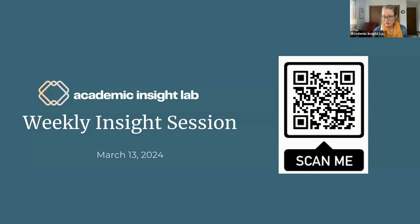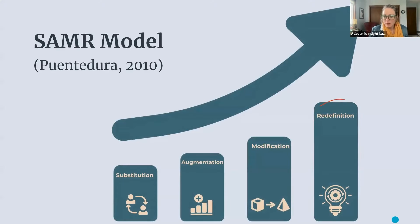But at some point I'm afraid there are going to be haves and have-nots when it comes to this technology — people who don't know how to use it at all and who are put at a disadvantage. One way we can think about this is the SAMR model for technology in educational settings, which has four stages that get increasingly more complex, each representing a different degree of technology use and impact on educational practices.